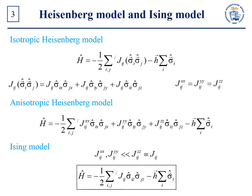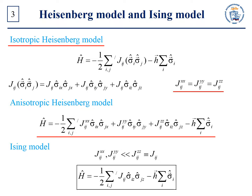The obtained Hamiltonian is referred to as the Hamiltonian of the isotropic Heisenberg model. The term isotropic points to equal strength of interaction between the components of magnetic moments along x, y, and z axes. In general, however, this is not the case because of the crystal field anisotropy, and the Hamiltonian has the following form — this is the Hamiltonian of the anisotropic Heisenberg model.